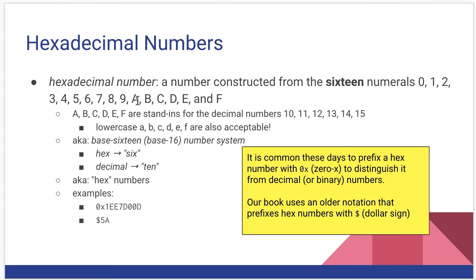And we also need numerals to correspond to the decimal numbers 10, 11, 12, 13, 14, and 15. And we represent those by A, B, C, D, E, and F. You have probably seen hexadecimal numbers before, and you might have been wondering why they have these letters in them. Again, these are stand-ins for 10, 11, 12, 13, 14, 15.